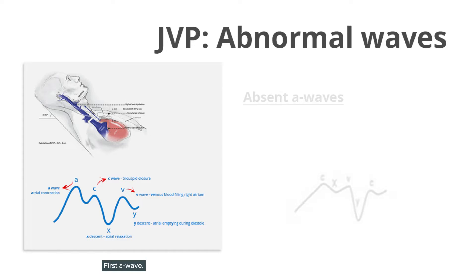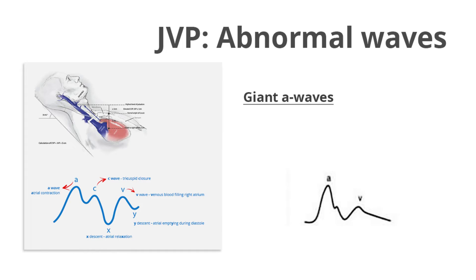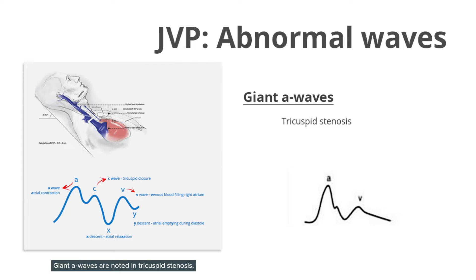First, the A wave. Since A waves are formed due to atrial contraction, these are absent in cases of atrial fibrillation. Giant A waves are noted in tricuspid stenosis, right heart failure, and pulmonary hypertension.